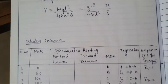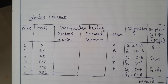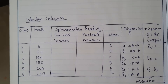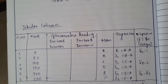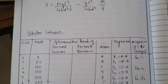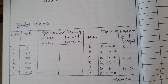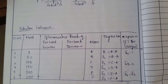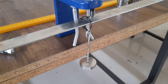The deflection can be calculated using a tabular column. We apply the load or mass in grams: 0, 50, 100, up to 250 grams — six readings in total. We note the spherometer reading for loading (increasing) as well as for unloading (decreasing), and then calculate the mean. Once we calculate the mean, we can calculate the deflection. Let us first understand how to load and unload the beam and note the spherometer readings.